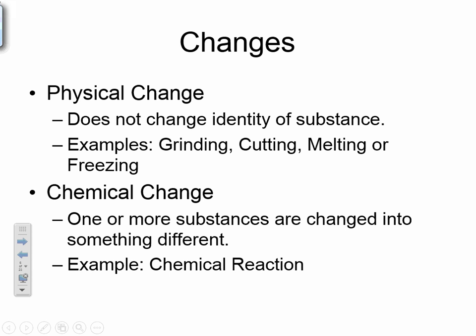In physical science, we're going to talk about two types of changes: physical changes and chemical changes. A physical change does not change the identity of the substance — for example, grinding, cutting, melting, or freezing. If I took a 2x4 and snapped it in half over my knee, did anything change? I still have two pieces of wood, but it's still wood. That's a physical change.